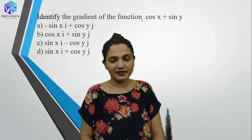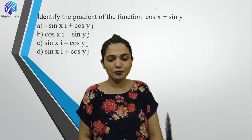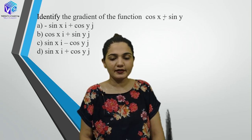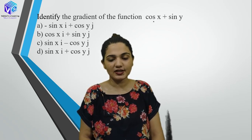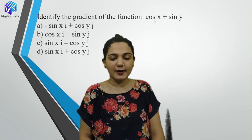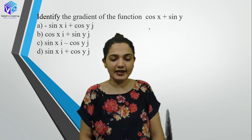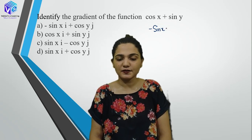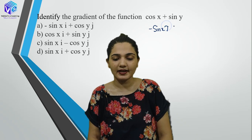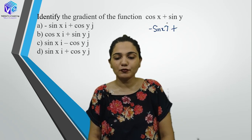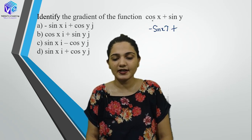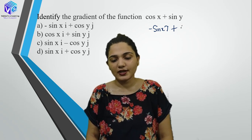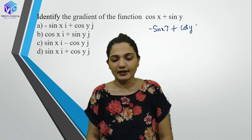Identify the gradient of the function cos(x) + sin(y). del/del(x): −sin(x) i-cap (since del(sin(y))/del(x)=0). del/del(y): cos(y) j-cap (since del(cos(x))/del(y)=0). del/del(z): 0. So the gradient is −sin(x) i-cap + cos(y) j-cap.